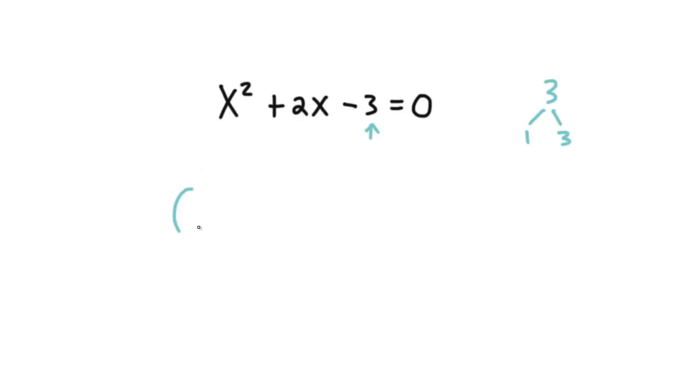So now we can make the two sets of parentheses. Make sure you make it equal to 0, and the x will go here, the x will go here, and the 1 and 3.